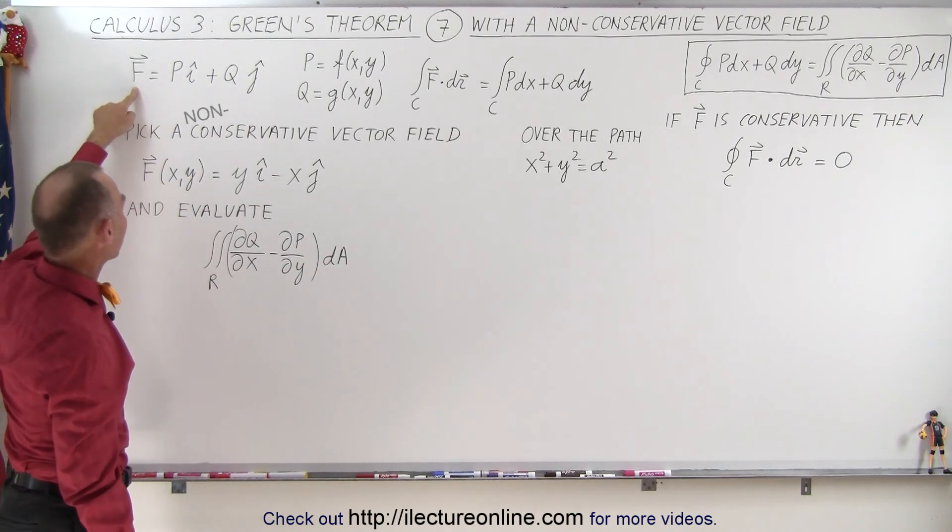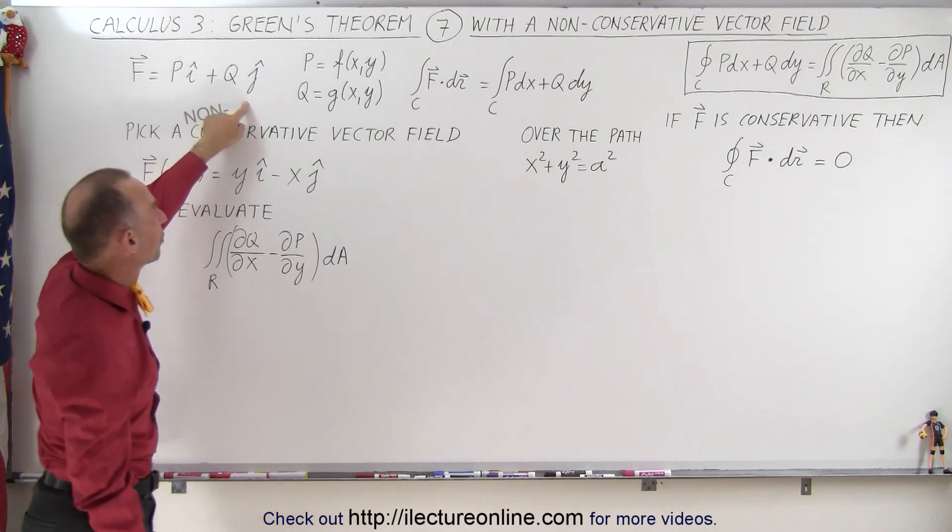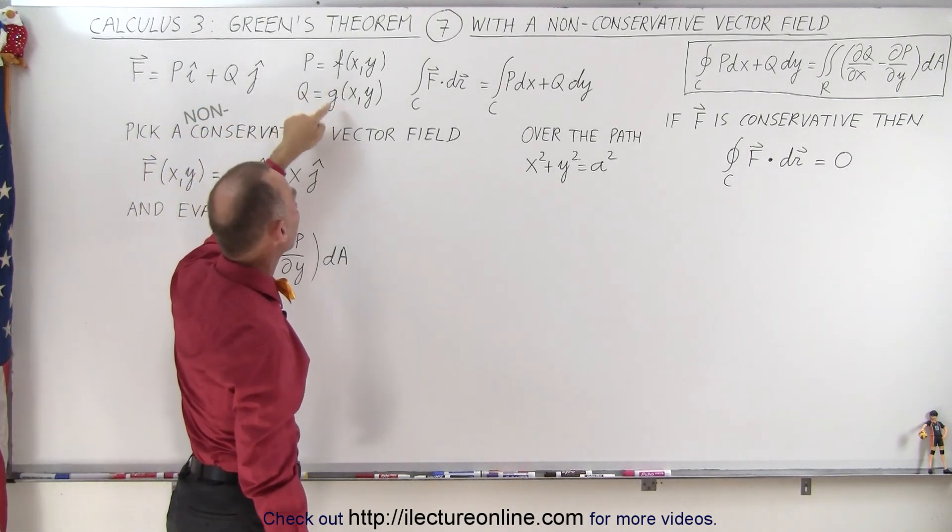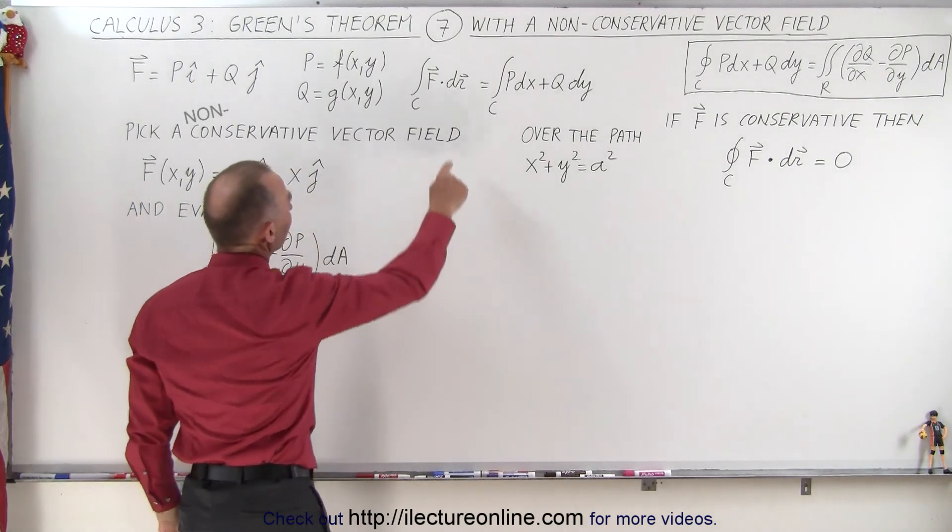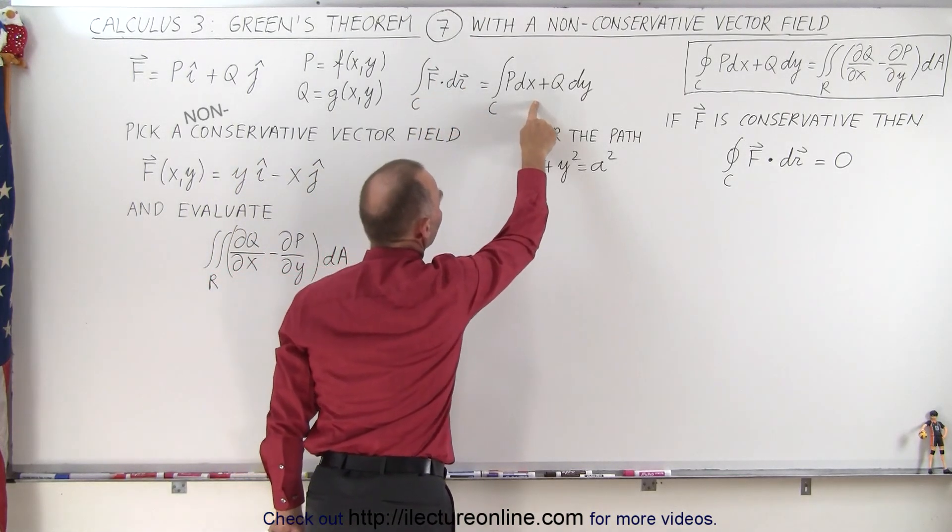Assuming that we have a vector field which is defined as P in the i direction plus Q in the j direction, where P and Q are both functions of x and y, you can see that this format of the line integral can be written as this format of the line integral, which is usually what you find as expressed in Green's theorem.